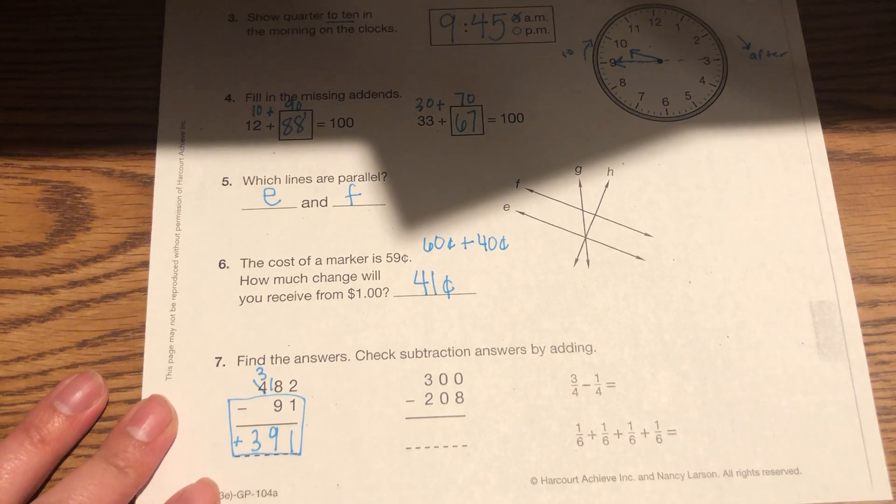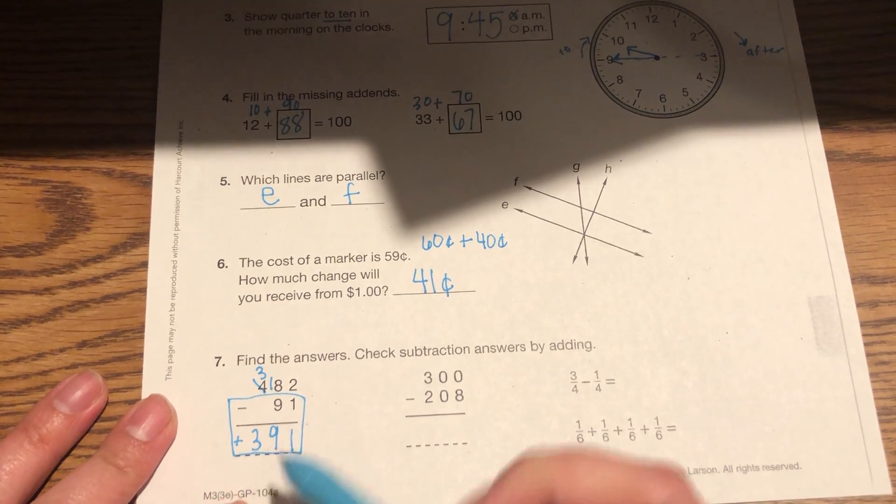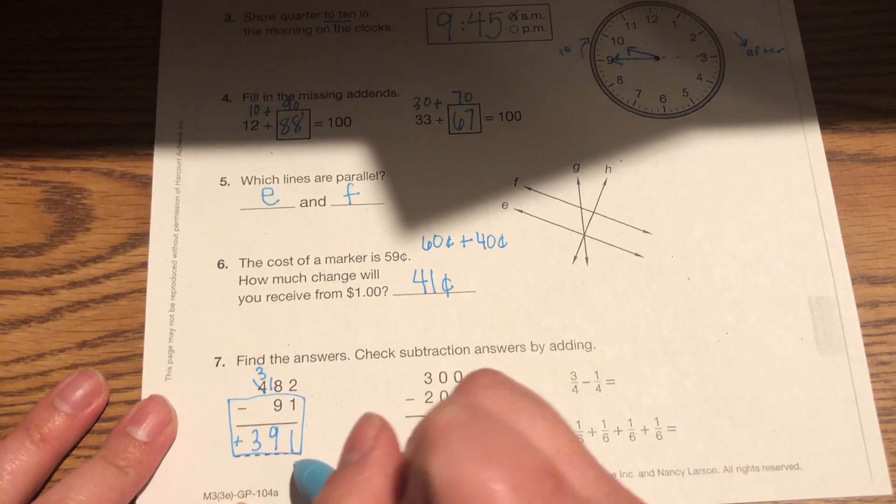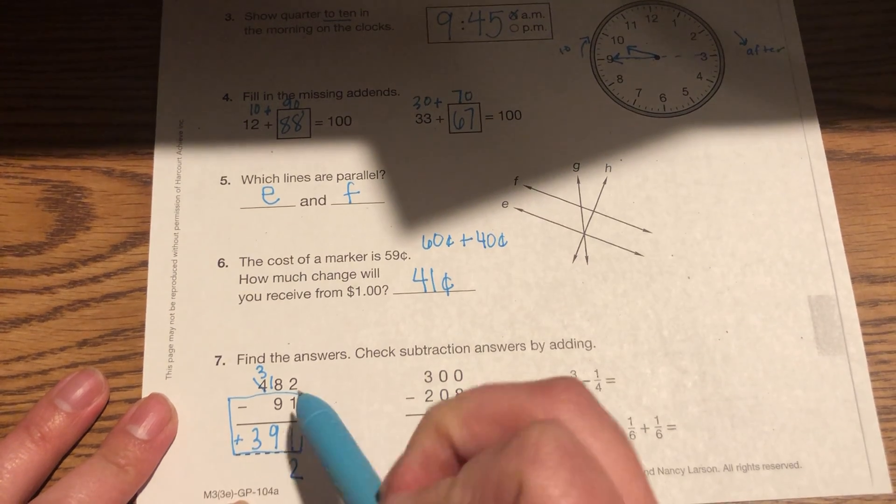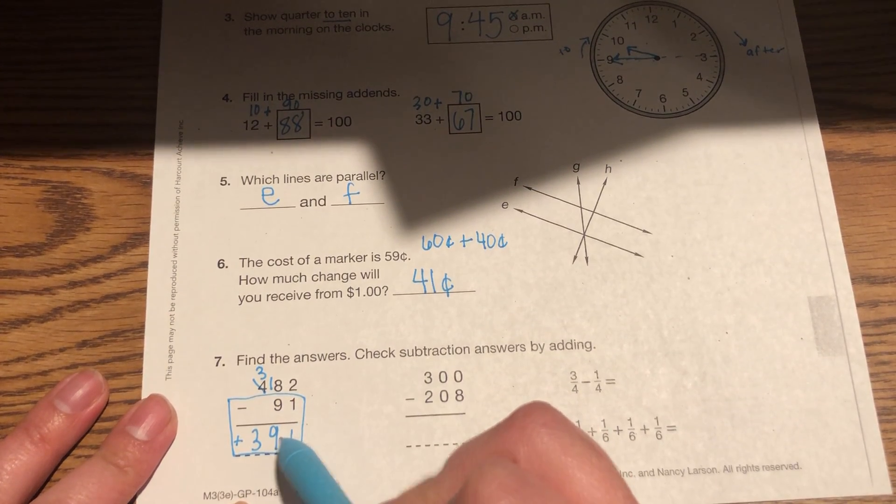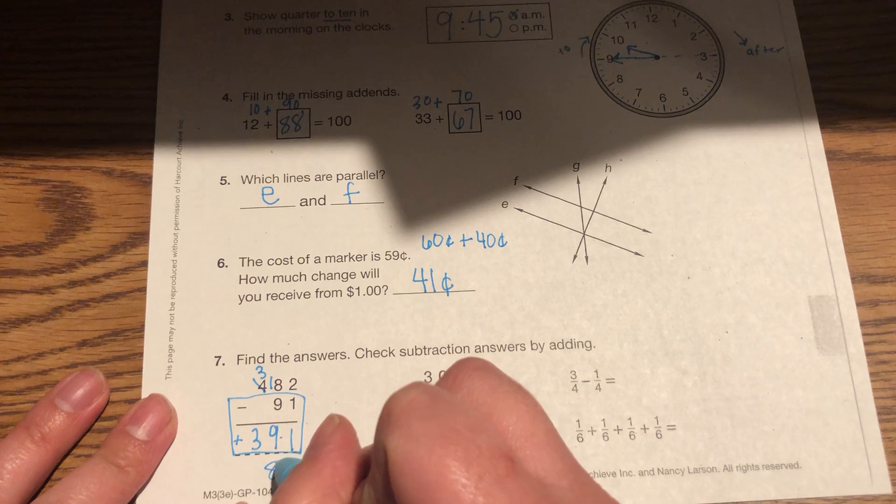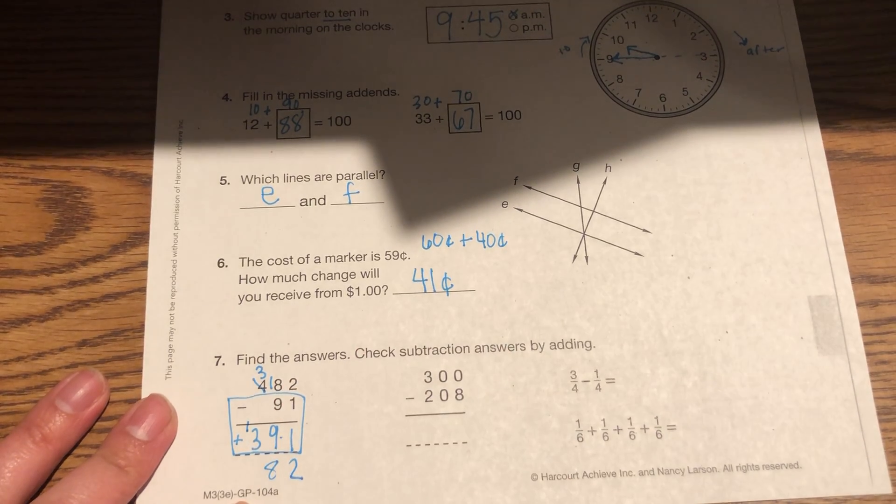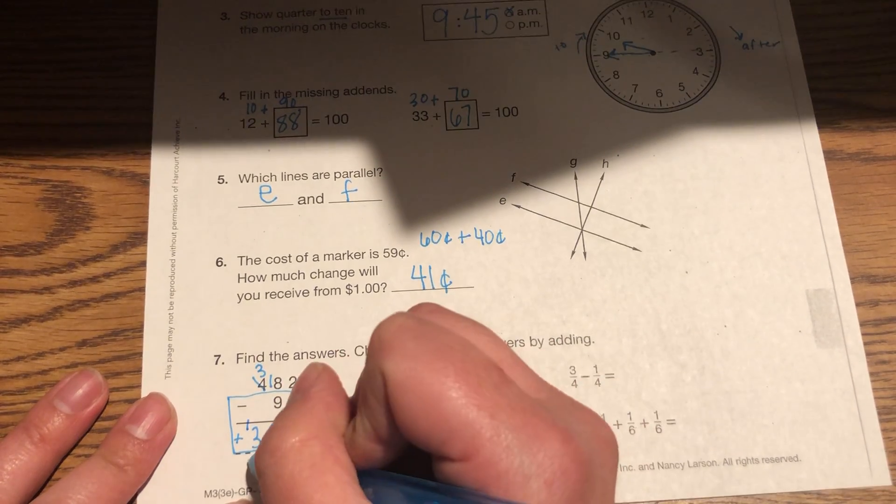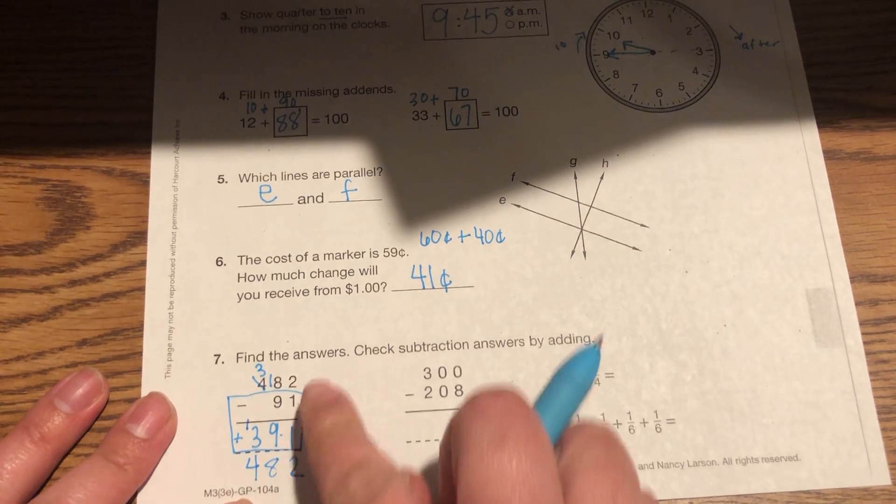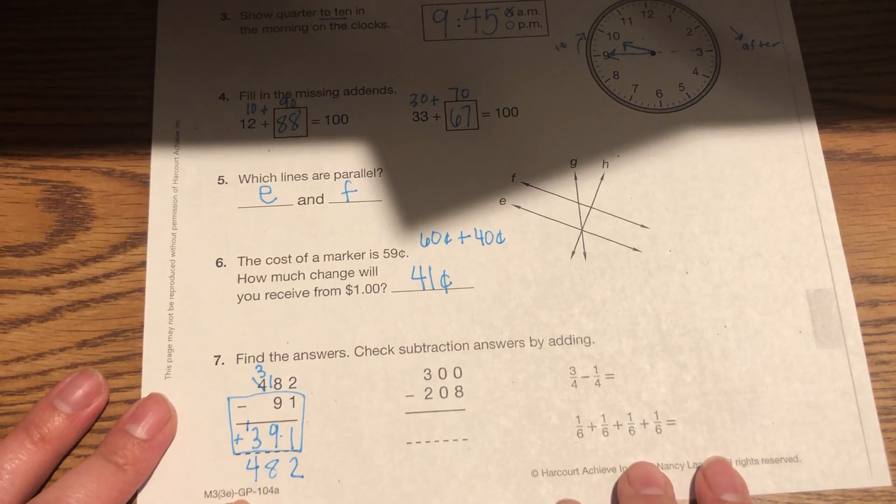And remember, we need to end up with that 482. So 1 plus 1 is 2. 9 plus 9 is 18. Carry your 1. 1 plus 3 is 4. Do they work? They do. Nice job.